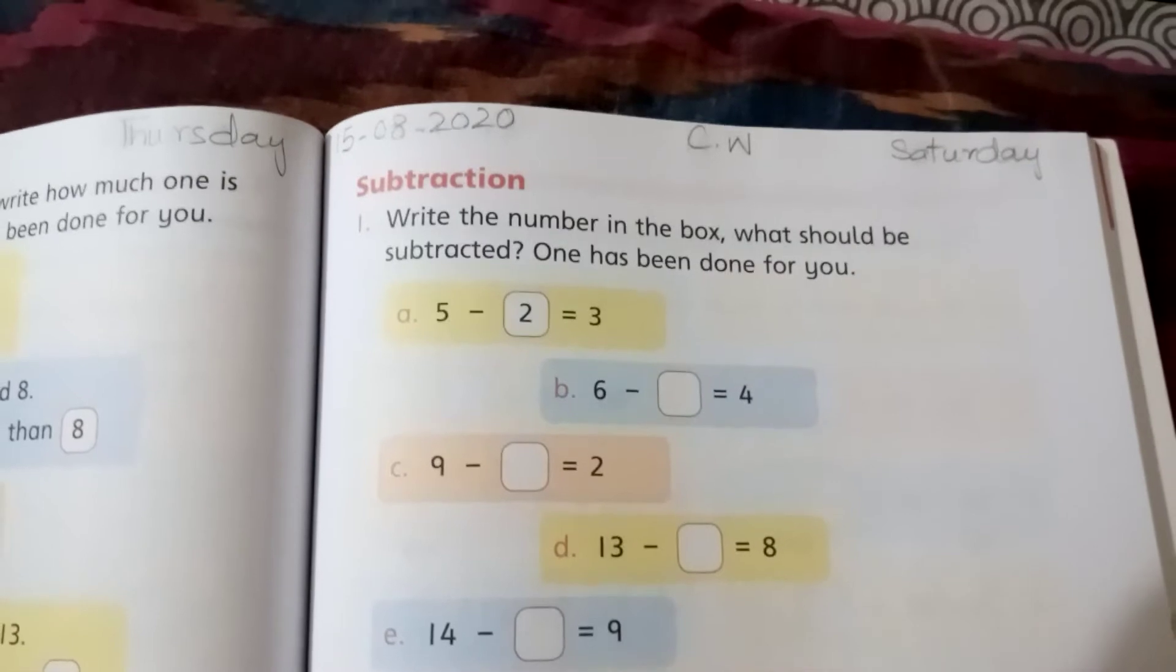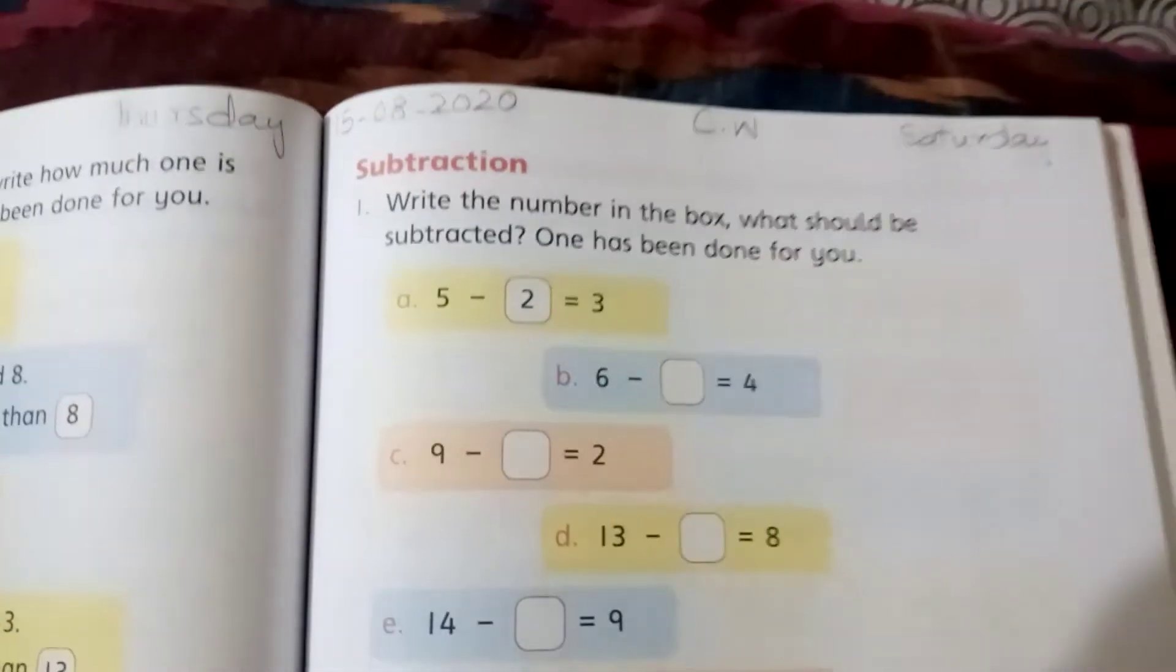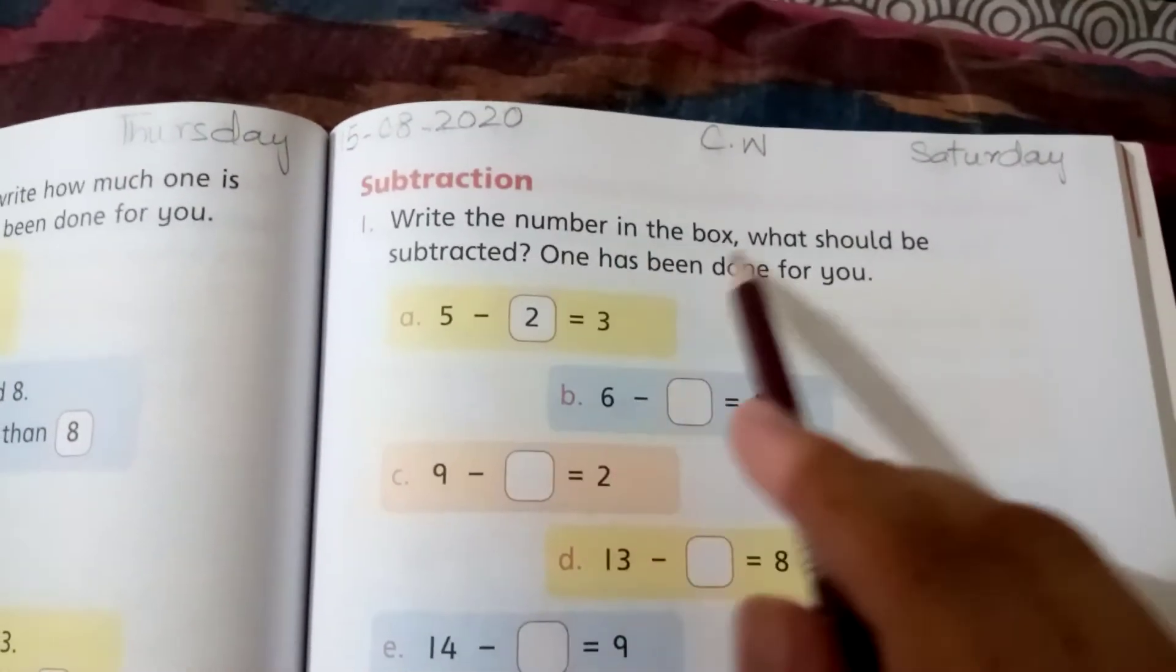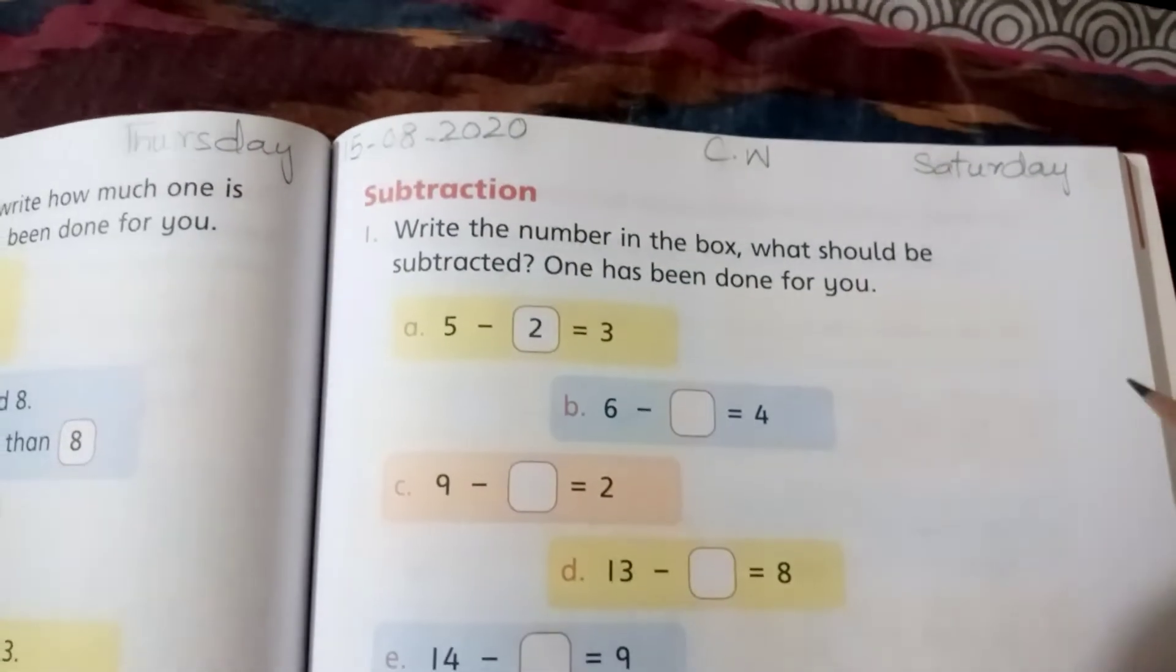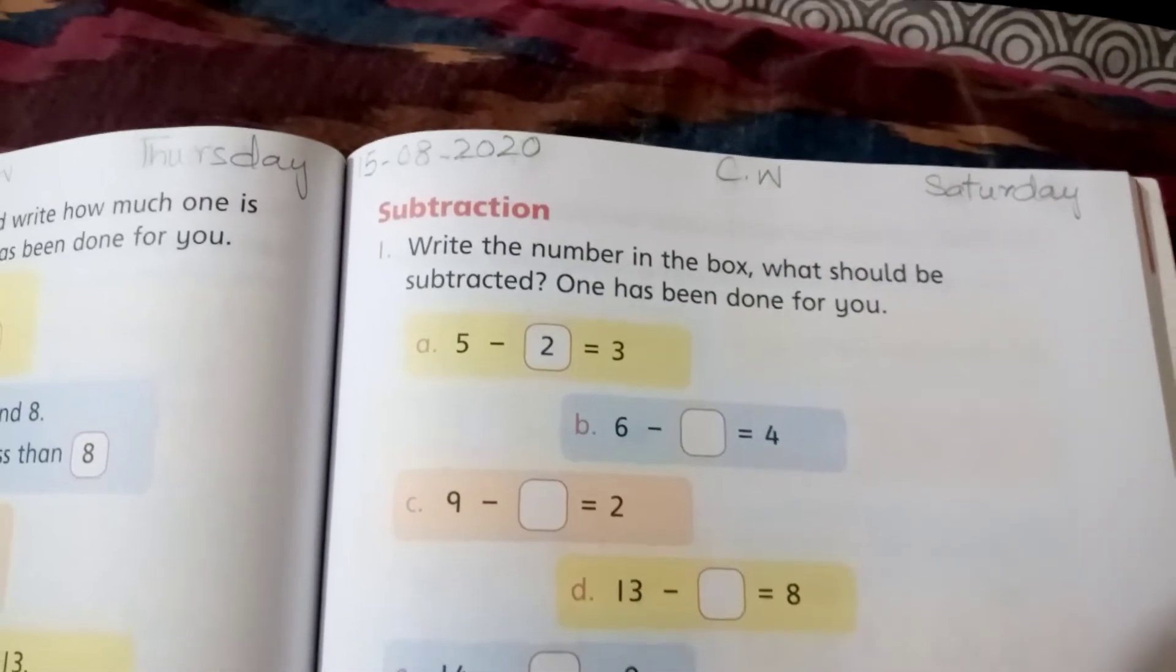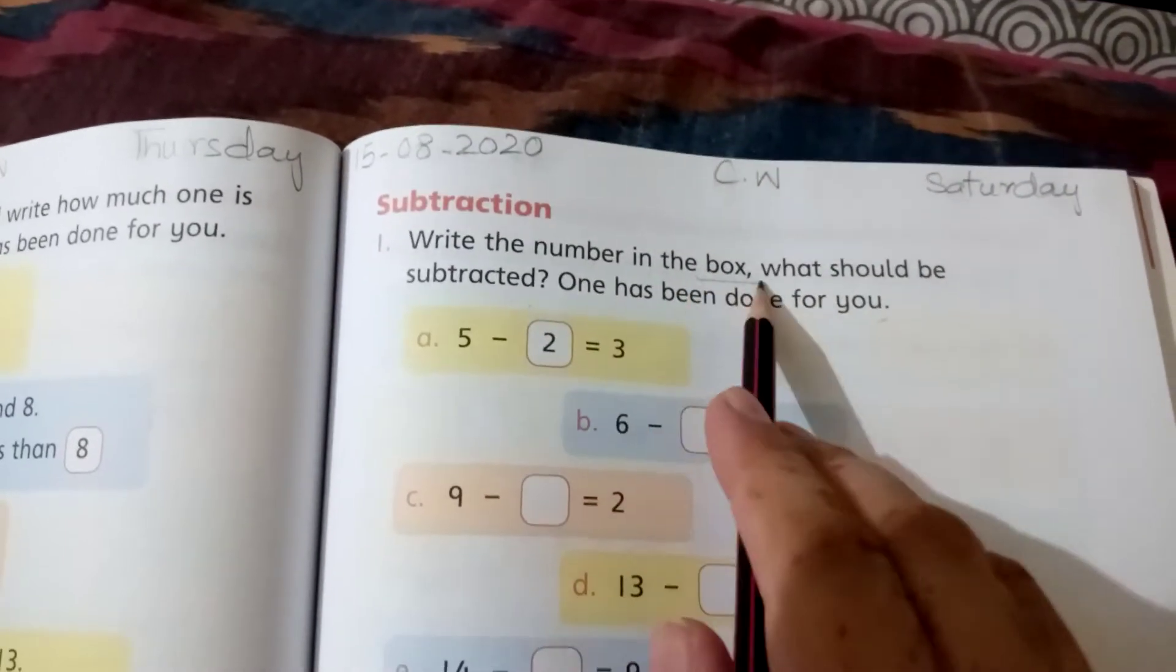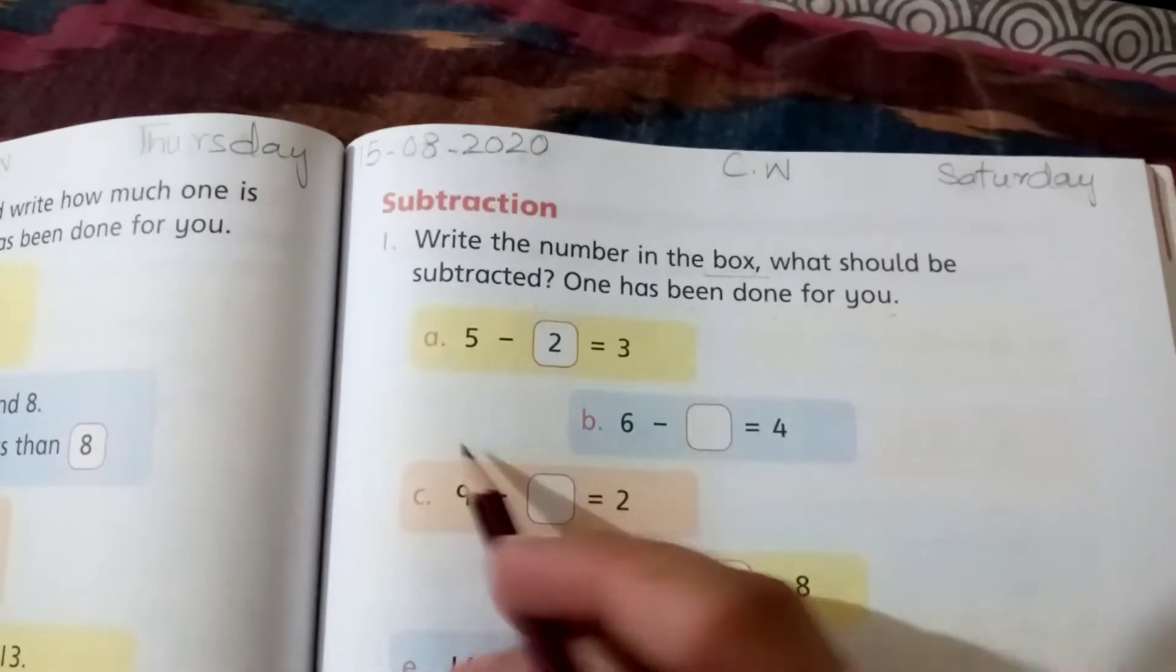What you have to do on this page: you are going to do subtraction. Write the number in the box, what should be subtracted. One has been done for you. You will subtract and get the answer, and if there is not, then you will also write it.